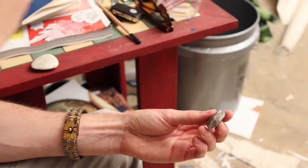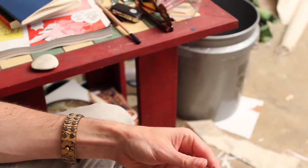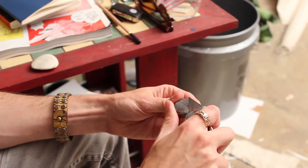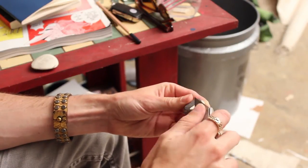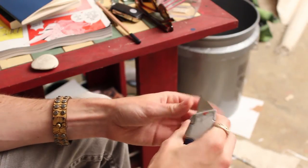Alright, you've got to be fairly careful when you do this, so make sure that your knife is particularly sharp. But it's really quite simple. All you've got to do is go around the edge of the eraser and shave off a little bit at a time.